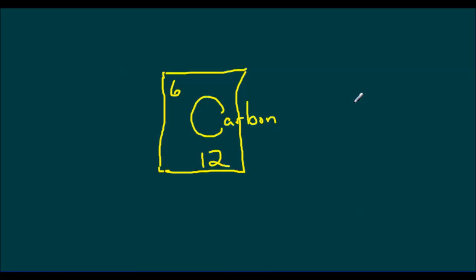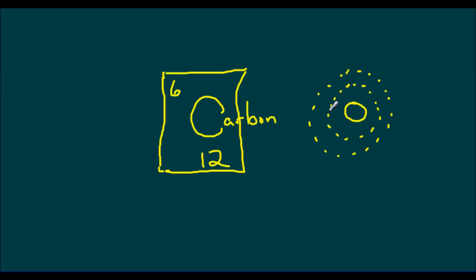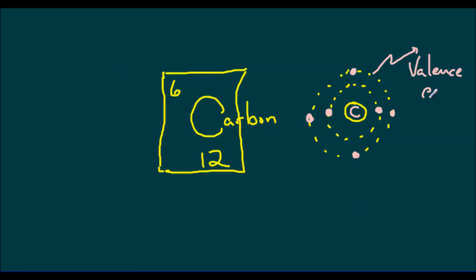We can do a Bohr-Rutherford diagram for carbon. We would have the nucleus, then one orbital out here and another orbital out here in our Bohr-Rutherford diagram. If you've taken any more chemistry since grade 10, you know that this is a bit of an inaccurate model, but it still works for what we want to do today. We have 2 electrons in the first shell and 4 electrons in the outer, or valence, shell — and that equals 4.